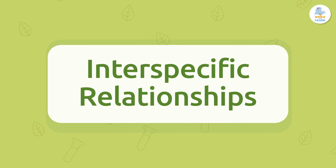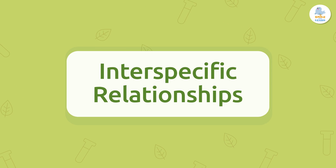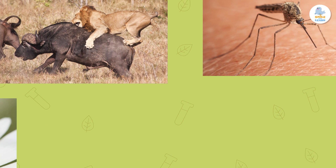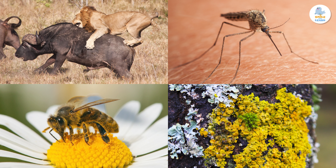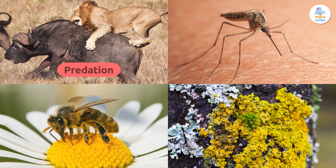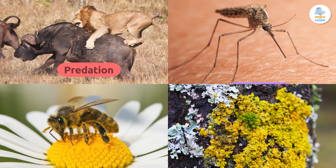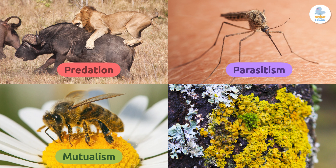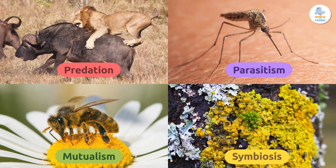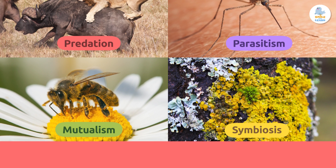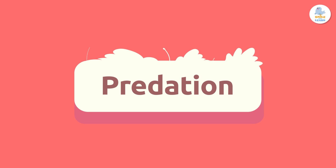Today we will learn the types of interspecific relationships. We will discover the four most common types: predation, parasitism, mutualism, and symbiosis.